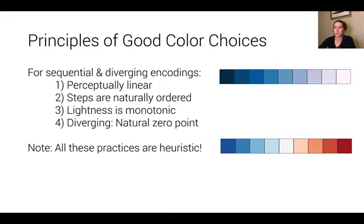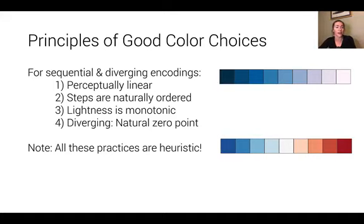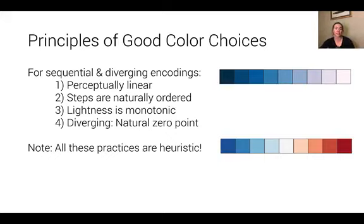I want to step through some additional properties to think about when choosing effective color for your data. For numeric data — sequential and diverging encodings — you generally want to choose encodings that are perceptually linear: the differences we see in the colors correspond to the actual value differences in our data. You want the steps to be naturally ordered, so as values get larger we can tell they're getting larger.